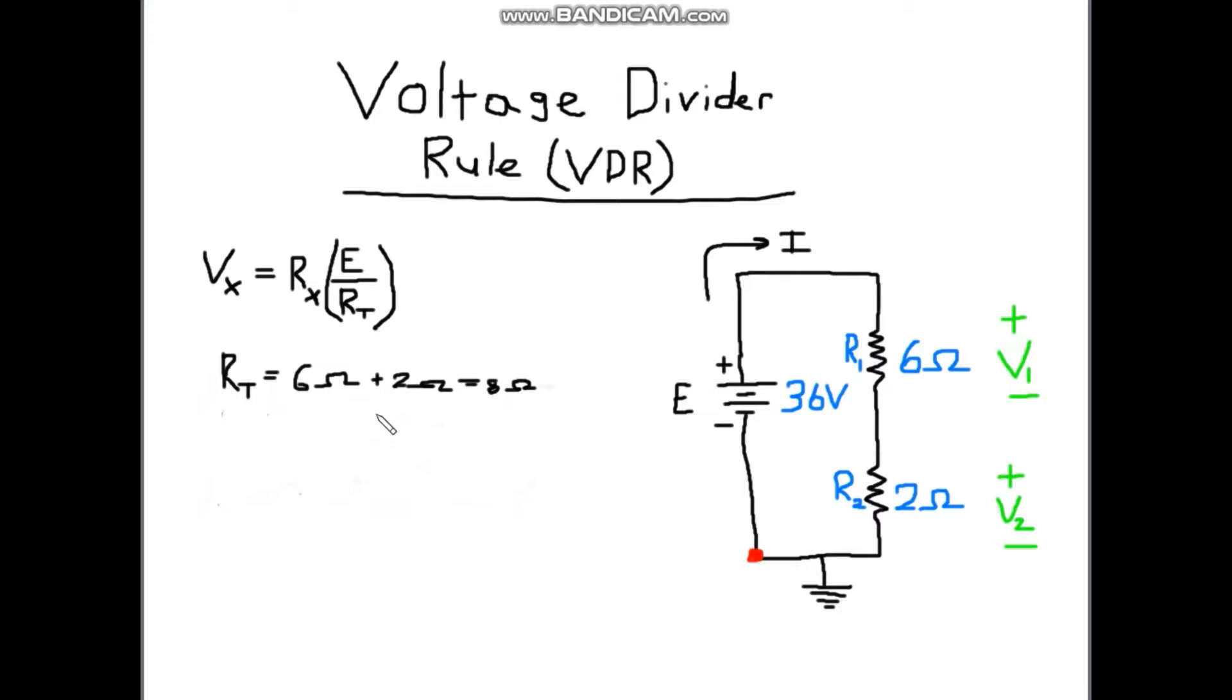So now we can go ahead and solve for these individual voltages. So if we were asked to solve for V1, the voltage drop across resistor 1, what we would do is we would say V1 equals the resistance of resistor 1, which is 6 ohms.